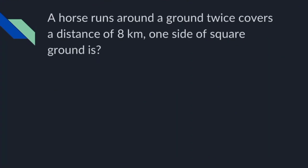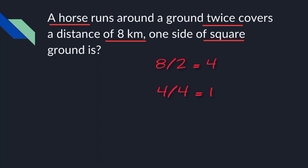A horse runs around a square ground twice and covers a distance of 8 km. One side of the square ground is how long? The total perimeter for two rounds is 8 km, so one full perimeter is 8 ÷ 2 = 4 km. Since a square has 4 equal sides, one side = 4 ÷ 4 = 1 km.